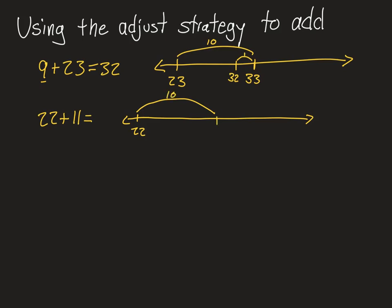That gets me to 32. But now I think about the number I was adding. Did I add one more or one less than I was supposed to? Well, I know that 10 is one less than 11. So I need to actually add one more. So now the adjust is actually going to be adding one more. So 22 plus 11 is 33.